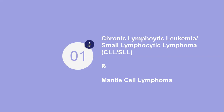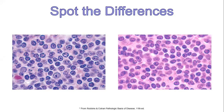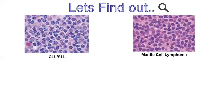We are going to discuss them side by side so that we can know their differences and discuss how to differentiate them from one another, as they are very important differentials for each other. So here's a little quiz — let's spot the differences. Other than the color difference, the cells look quite similar. One of them is CLL and the other is mantle cell lymphoma. These pictures are taken from Robbins Pathologic Basis of Disease. Let's find out which one is which.